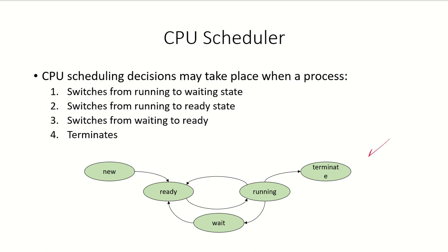If you remember the state diagram of processes, whenever the running process goes to a wait state, the CPU becomes available. Suppose process P1 was running and it has gone to a wait state — either waiting for an event or for I/O. The CPU on which it was running is now available and will be allocated to one of the processes in the ready queue. This is one scenario.